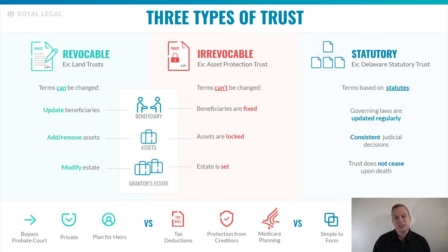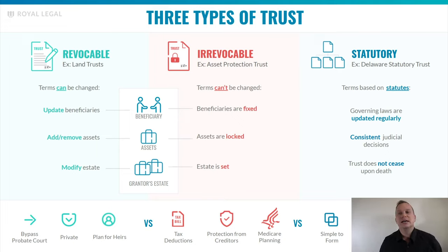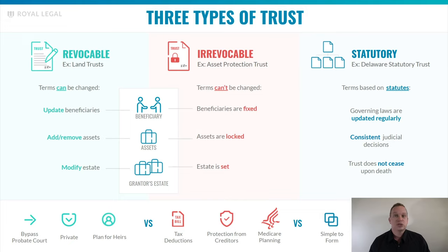The second type of trust is the irrevocable trust, commonly referred to as an asset protection trust. The terms of this trust can't be changed, the beneficiaries are fixed, the assets are locked inside of the trust, and it doesn't give you any flexibility. But what it does do is provide asset protection — because with a revocable trust, if a revocable trust is sued or you're sued, they can get to all of the assets held inside of a revocable trust. In an irrevocable trust, they're not able to do that.